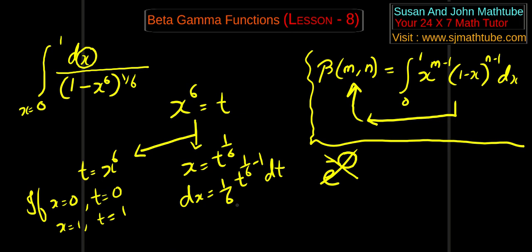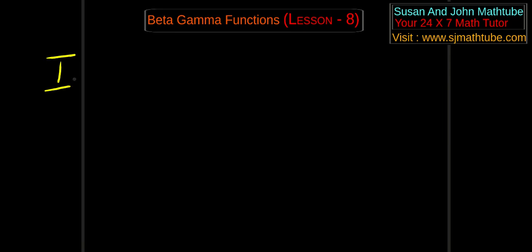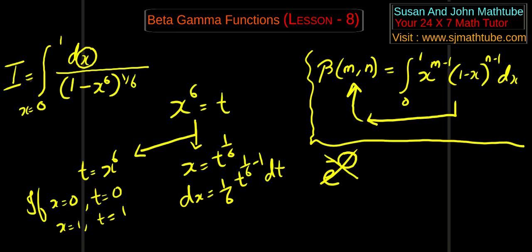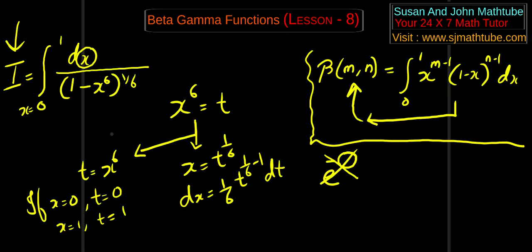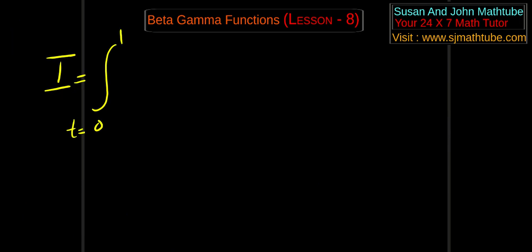Shall we substitute? Yeah, sure. So i is equal to, I forgot to give the given integral a name. Let's call it i. So integral t is equal to 0 to 1, dx is 1 by 6, t to the power 1 by 6 minus 1, divided by (1 minus t) to the power 1 by 6. And did we forget something? I hope not.